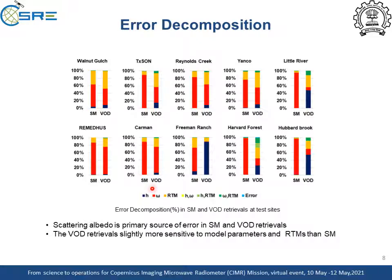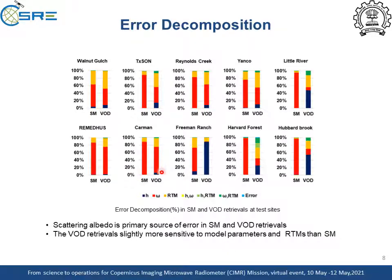The error in SM and VOD retrievals are decomposed into the contributions of H, omega, RTM, and their interactions as shown in this figure for all test sites. From this figure, we can infer that omega is a predominant source of error in both SM and VOD retrievals for most of the land-use land cover types. In dense vegetated pixels, there is uncertainty in the VOD retrievals due to the H parameter, which is more than from other land-use land cover types. VOD retrievals are also slightly more sensitive to the model parameters than the SM.